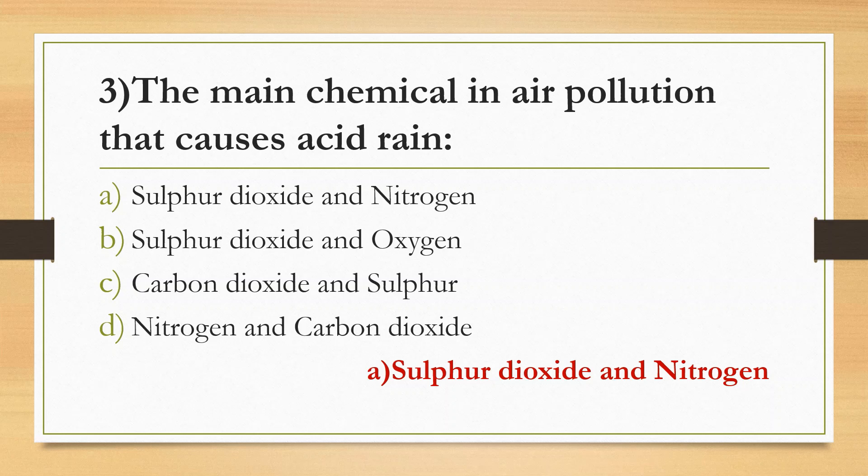Sulfur dioxide and nitrogen mix and react with water, oxygen, and other chemicals to form acid rain. Other air pollutants include carbon dioxide, ground-level ozone, and particle pollution.